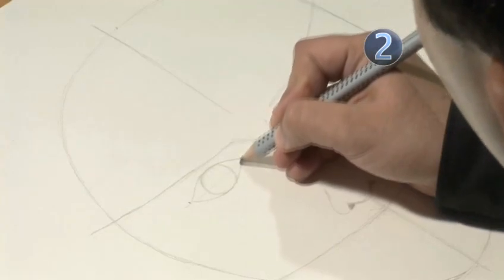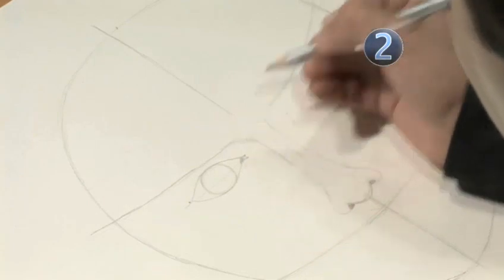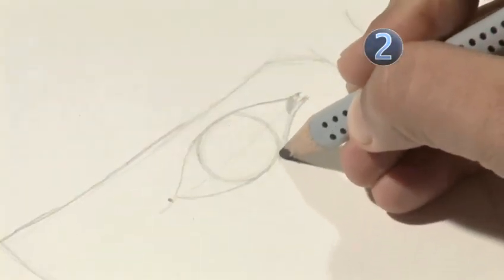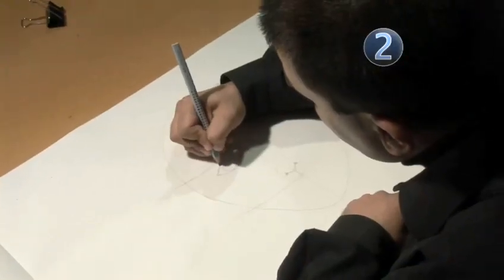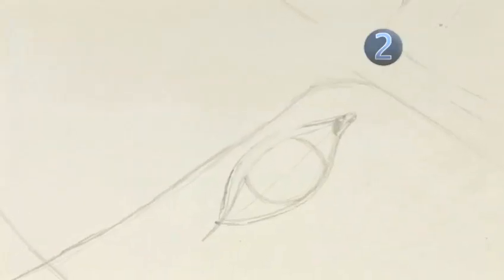Now shade the area between the two lines at the inner point of the eye to represent the tear duct. Draw a line beneath the bottom edge of the eye and another beneath the top edge to form the eyelids. The top eyelid should be thicker than the bottom one.